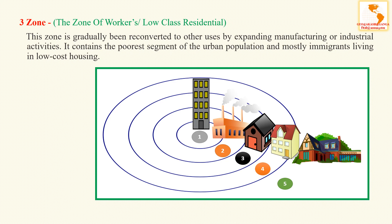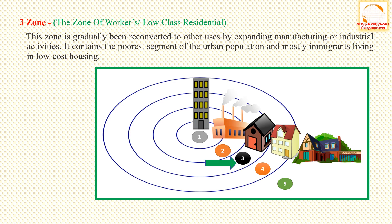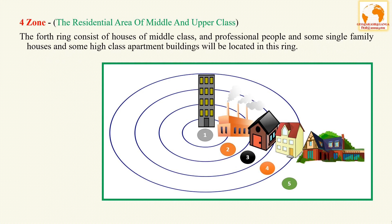The third zone is the zone of workers, or low-class residential. This zone is gradually being reconverted to other uses by expanding manufacturing or industrial activity. It contains the poorest segment of the urban population, mostly immigrants living in low-cost housing. This ring consists of small houses originally belonging to working men who had lived closer to the CBD.